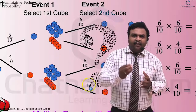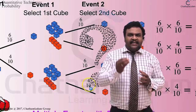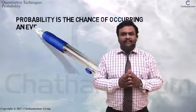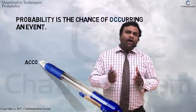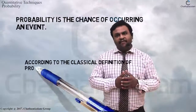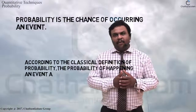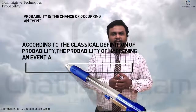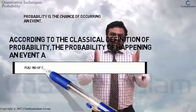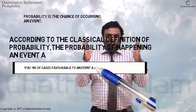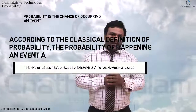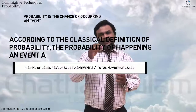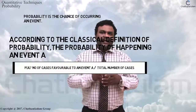We can define probability in a simple manner as it is a chance of occurring an event. According to the classical definition, the probability of happening an event A is equal to the number of cases favorable to event A divided by the total number of cases. This is the definition given under the classical definition.